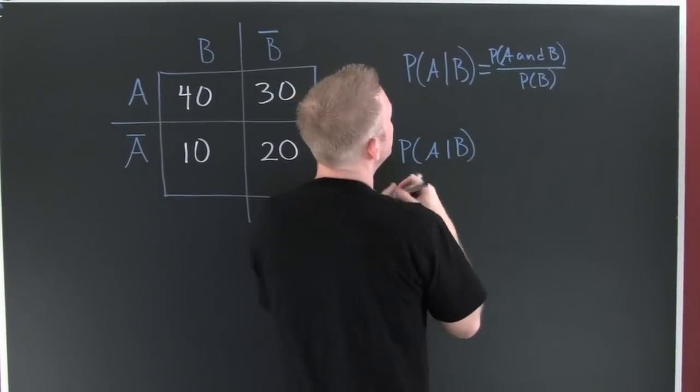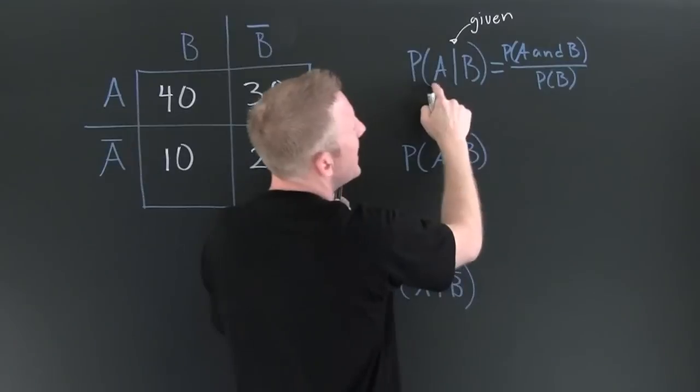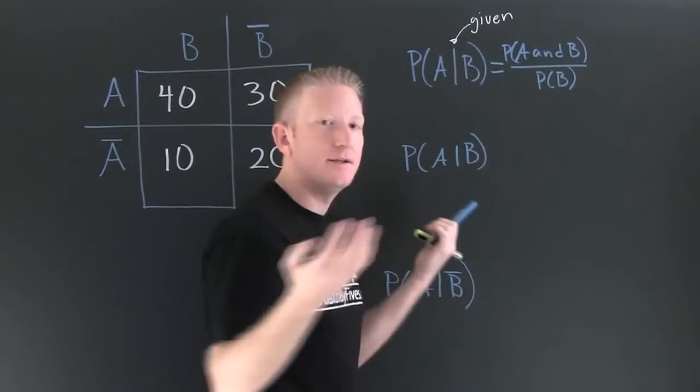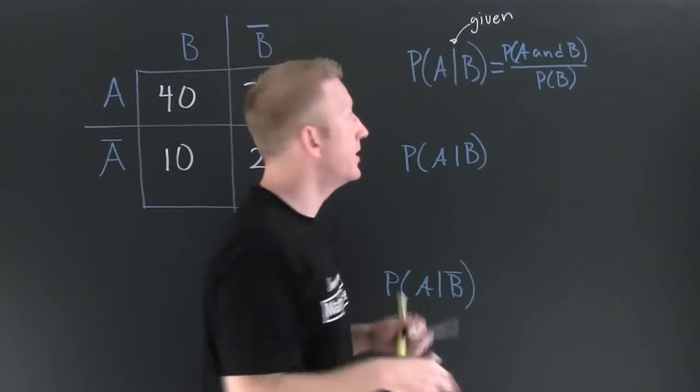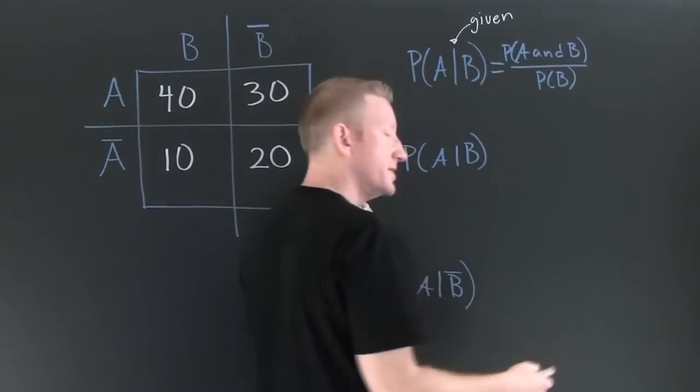This line right here, when you say it, this is given. So this is A given B. We can calculate this as the probability of A and B divided by the probability of B.